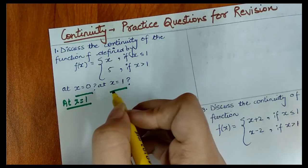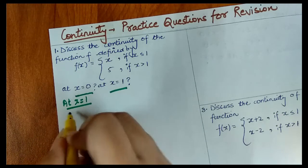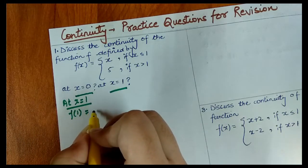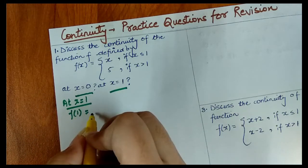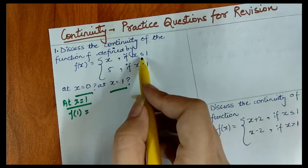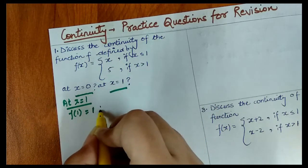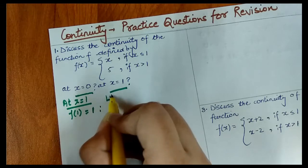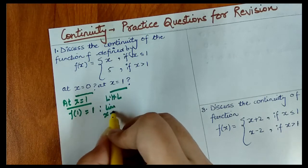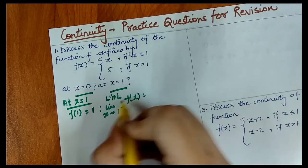At x equal to 1, we have to do three things. First, we find the function value: f(1) equals 1. Now we find the LHL — left hand limit — which is the limit as x approaches 1 from the left of f(x).